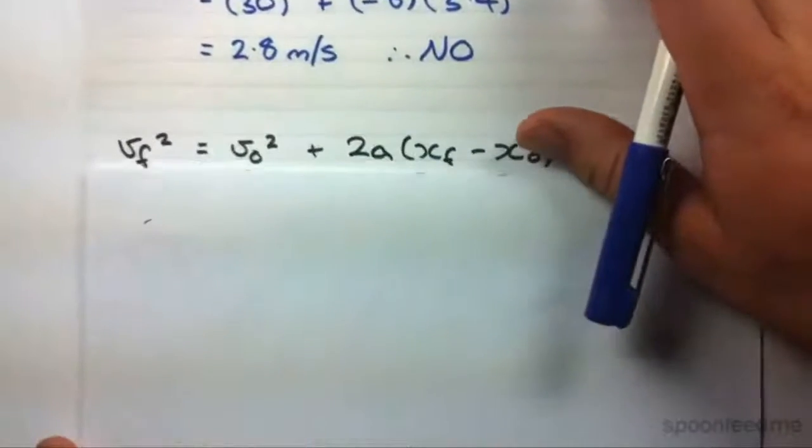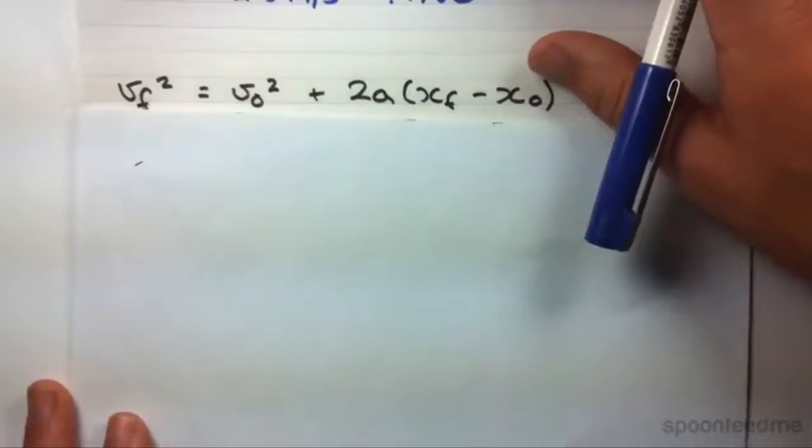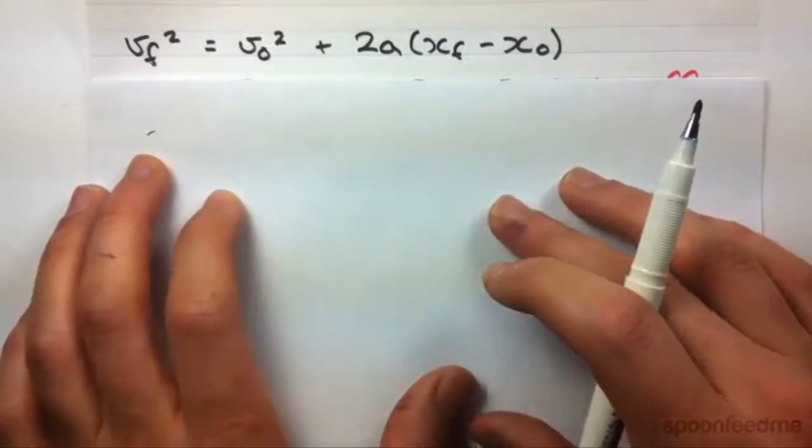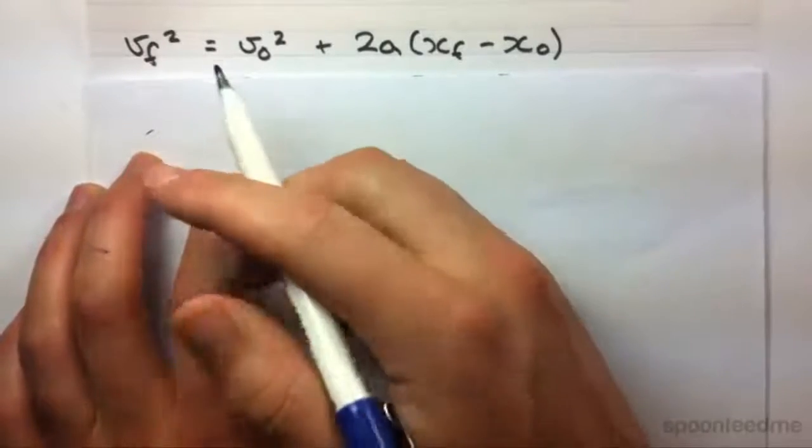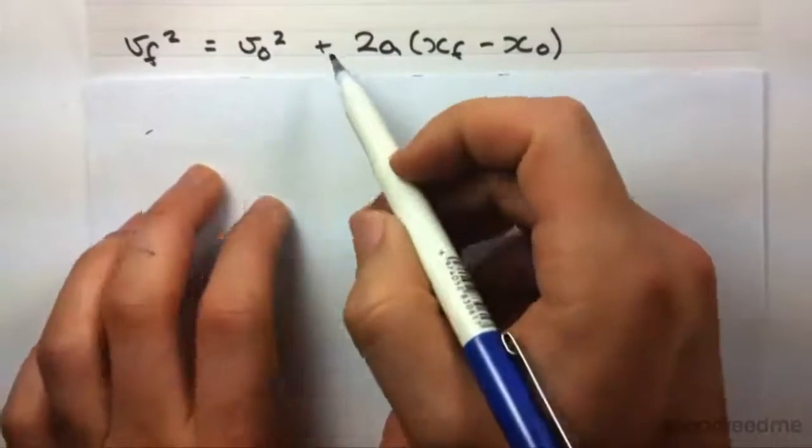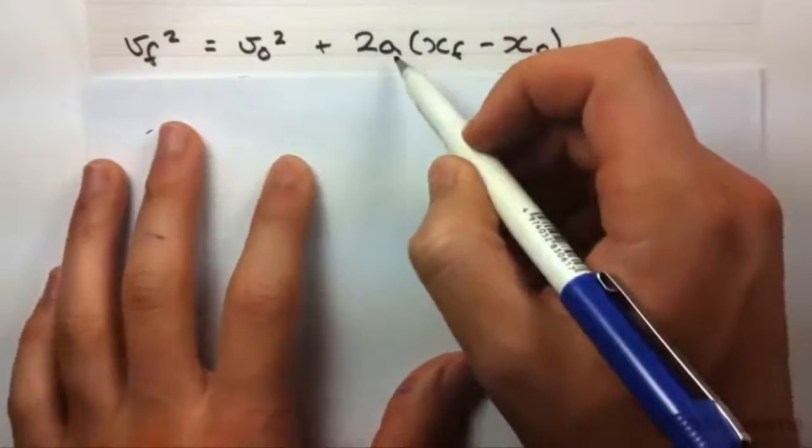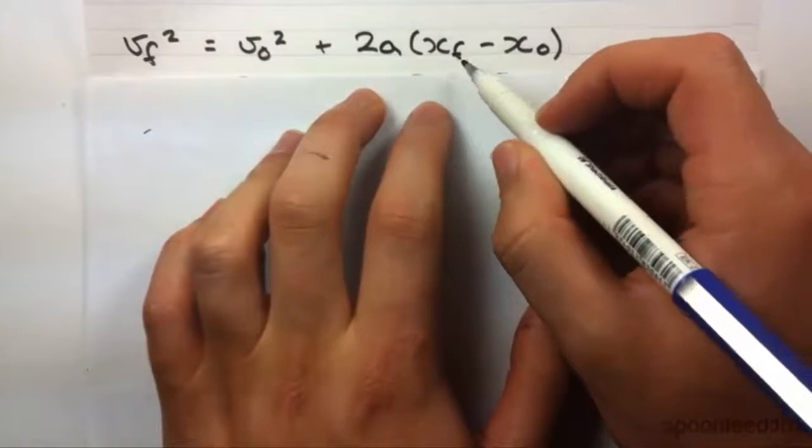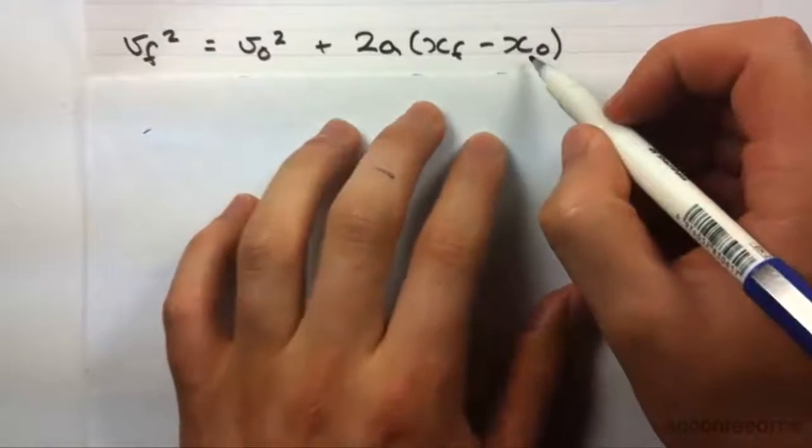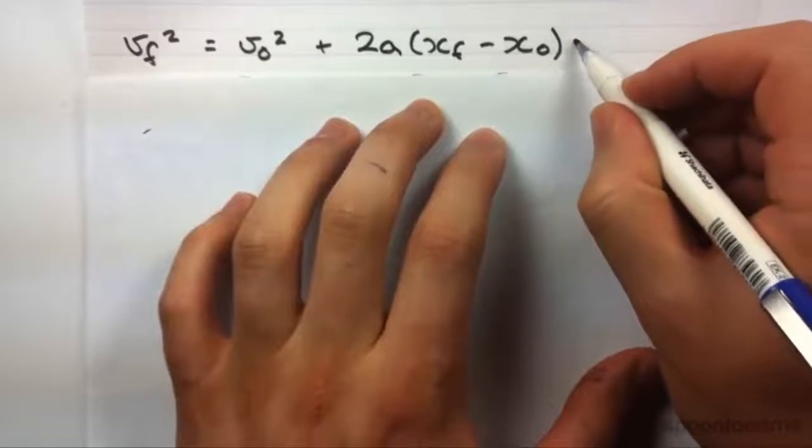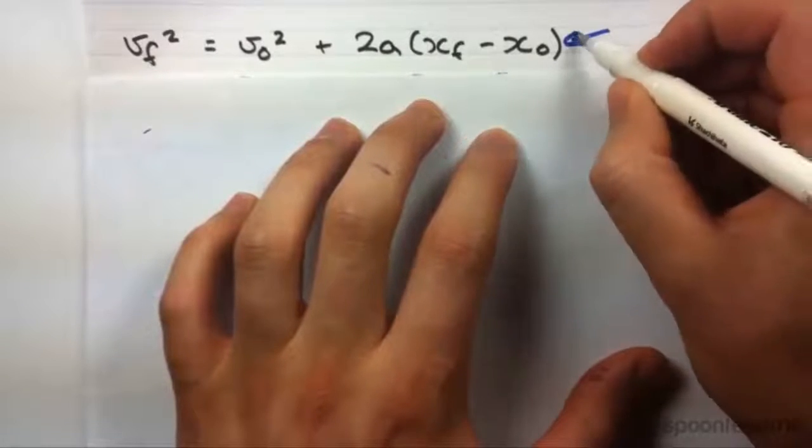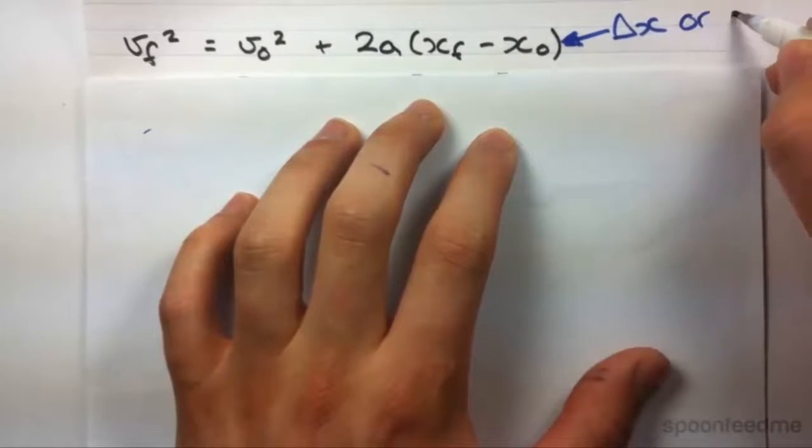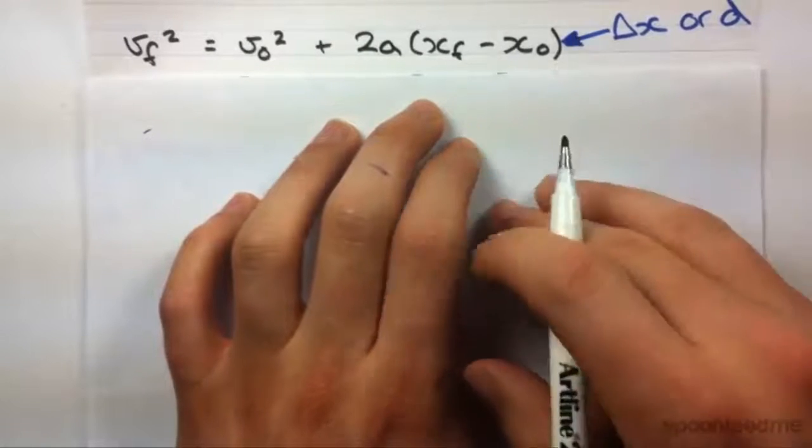The last equation we're going to look at is this one. It says that the final velocity squared equals the initial velocity squared plus 2a times the final displacement minus initial displacement. Now, the thing about what's in the brackets, it's really just the change in x. And it's sometimes written as that or even d for distance.